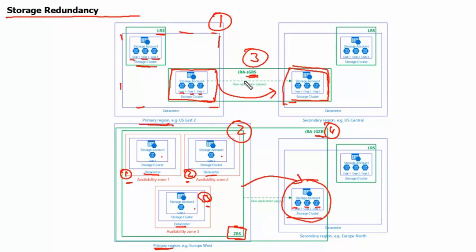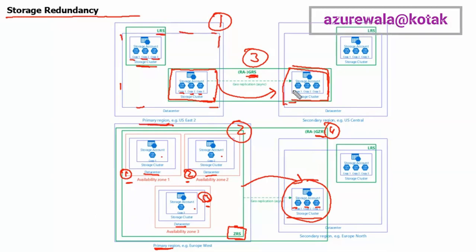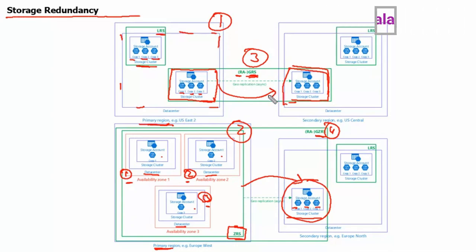With GRS or GZRS, the data in the secondary region isn't available for read or write unless there is a failover to the primary region. For access to the secondary region, we need to configure the storage account to use read-access geo-redundant storage, or RA-GRS, or read-access geo-zone-redundant storage, RA-GZRS.